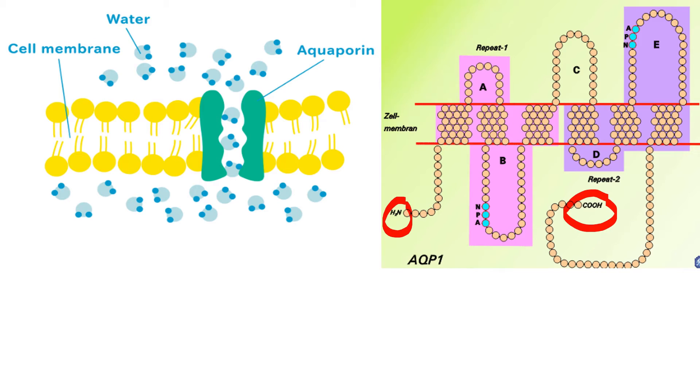These regions, A, B, C, D, and E, are either on the inside of the cell or on the outside of the cell.